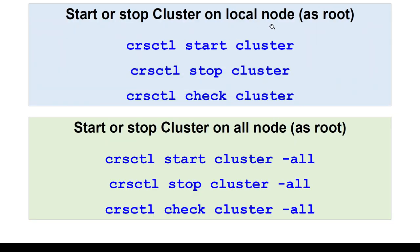If you want to stop the cluster on a local node, you will say stop cluster. If you want to start, you will say start. If you want to check the cluster status, you will say check. If you want to do it across all the clusters, you will use the -all option. If you use the -n option, you can specify on which node you want to operate — so from one node you can manage the cluster on another node using -n, where n stands for node.